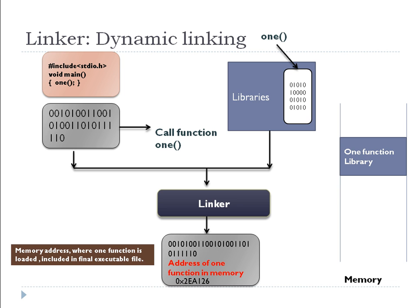So now the size problem is resolved. As the number of functions increases, our executable file size will increase only in fractions, because per function we are including only the address. In case of static linking, the entire object code of that function is included in the final executable file. With dynamic linking, there is no size issue — the size problem is resolved.